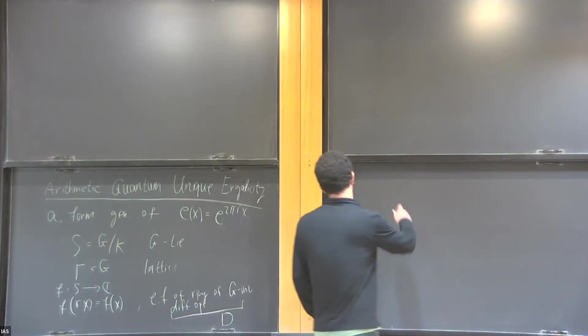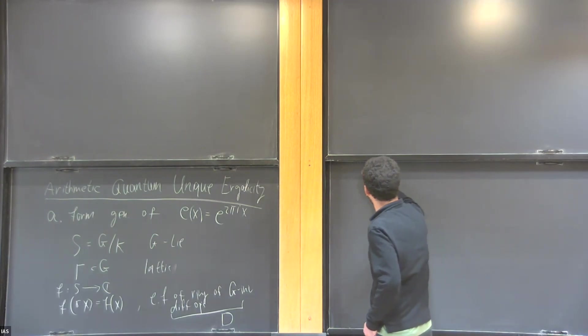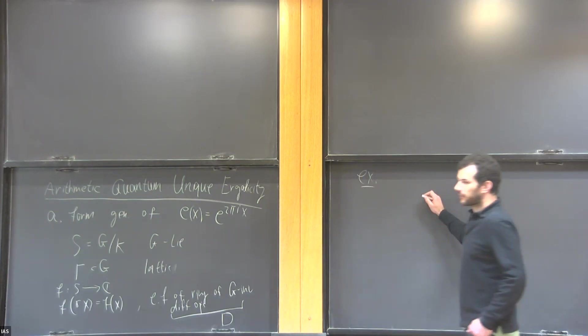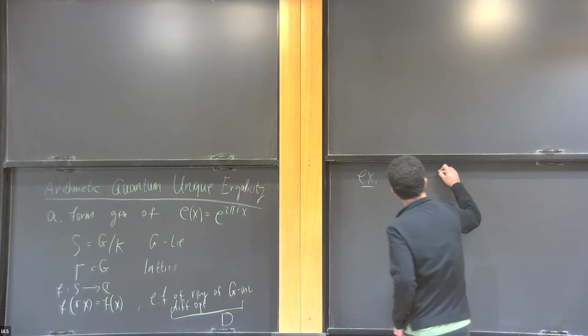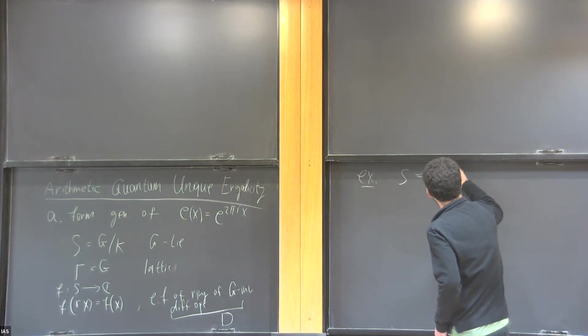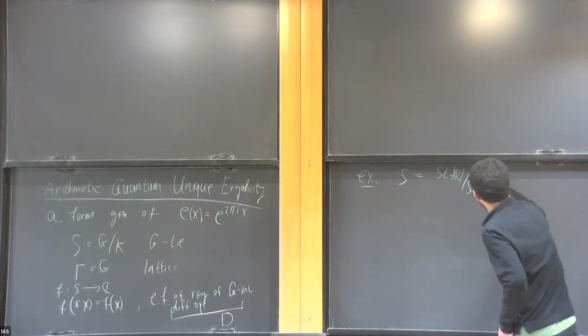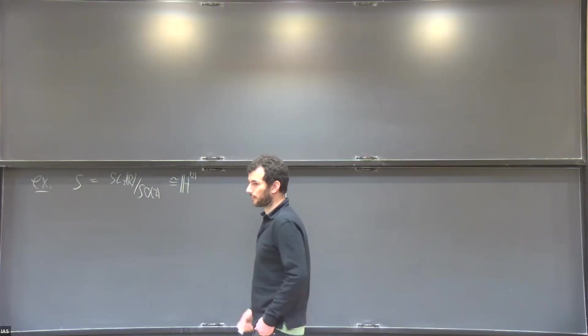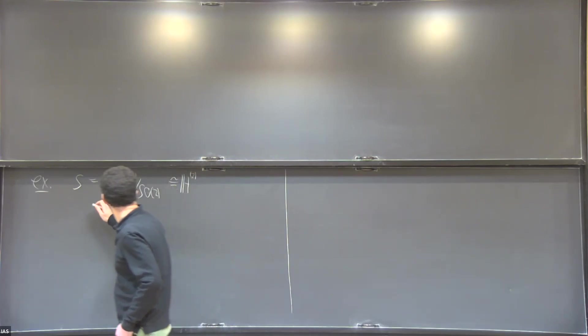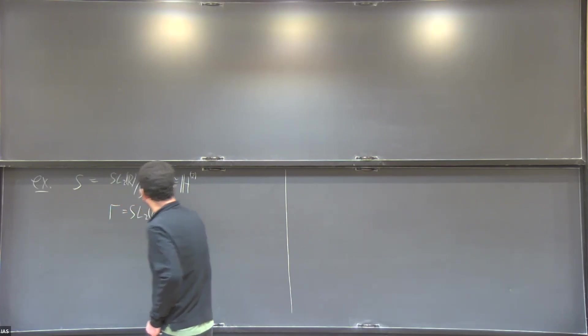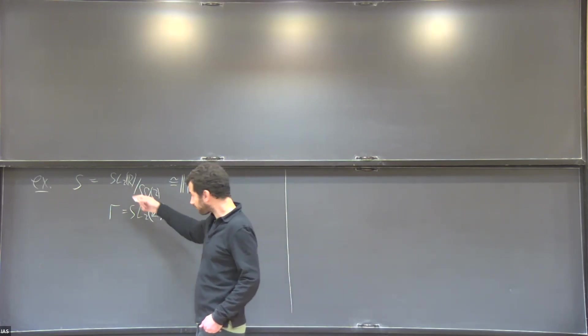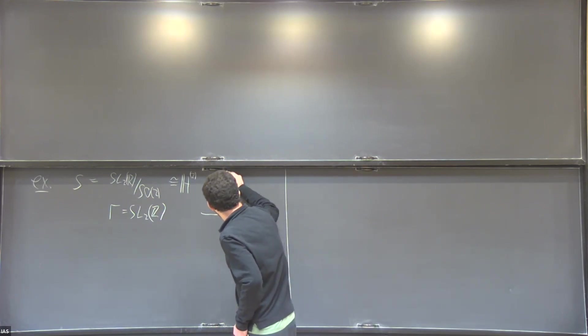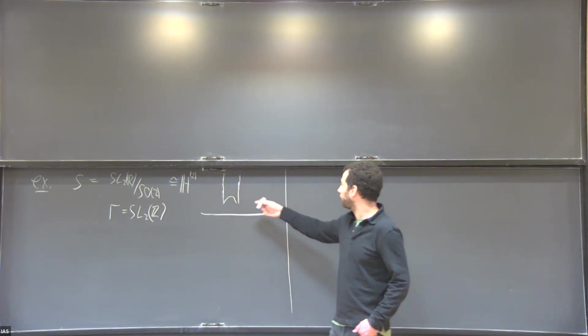To give a concrete example of this setup which is important for the lecture today, consider the symmetric space, the homogeneous space S of the Lie group SL(2,R) divided by SO(2). You can identify this with the upper half plane, and we think of SL(2,R) acting by Möbius transformations. You can take gamma to be SL(2,Z), so of course this is discrete. And there is a well-known fundamental domain for this action. You can see that this is a hyperbolic triangle with finite area, so this is a lattice.